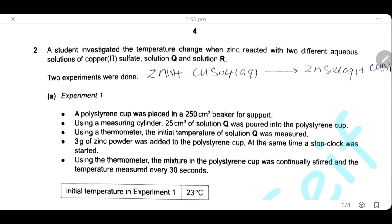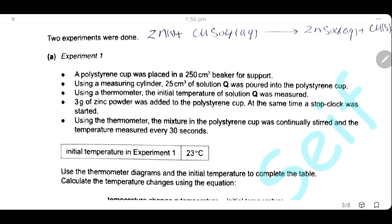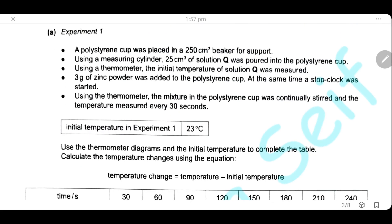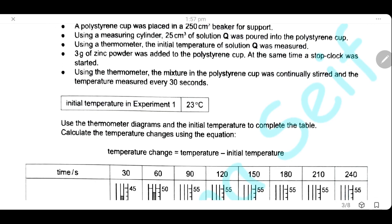Question 2. A student investigated the temperature change when zinc reacted with two different aqueous copper sulfate solutions, solution Q and solution R. In experiment 1, a polystyrene cup was placed in a 250 cm³ beaker for support. Using a measuring cylinder, measure 25 cm³ of solution Q and put it in the polystyrene cup. Using a thermometer, the initial temperature of solution Q is measured. Then, add 3 g of zinc powder and start the stop clock.